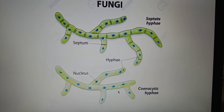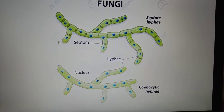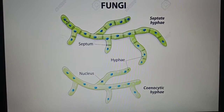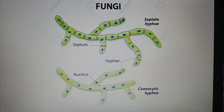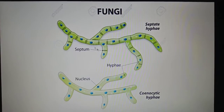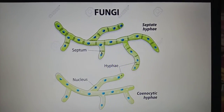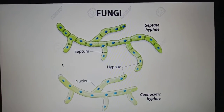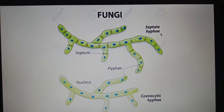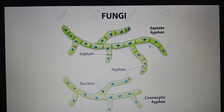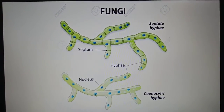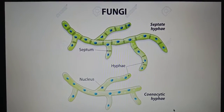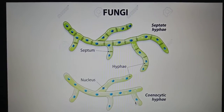In the first case, these walls are called septum. Those hyphae which have septa at regular intervals are said to be septate hyphae, and those which do not have walls or septa are said to be coenocytic or aseptate hyphae.